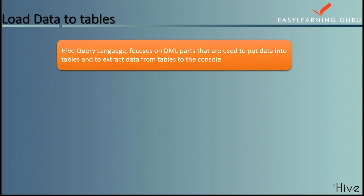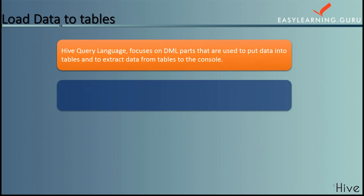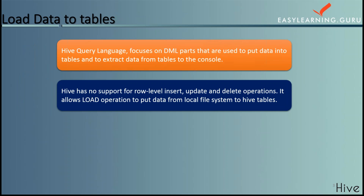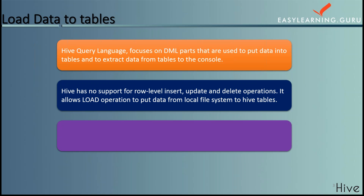So Hive has no row-level insert, update, and delete operations. The only way to put the data into the table is using one of the bulk load operations, or you can just write the files in the correct directory by other means also.